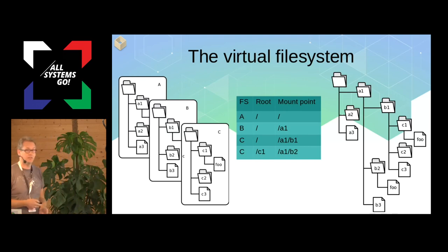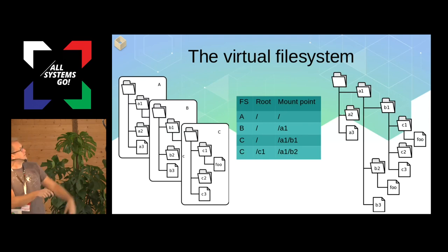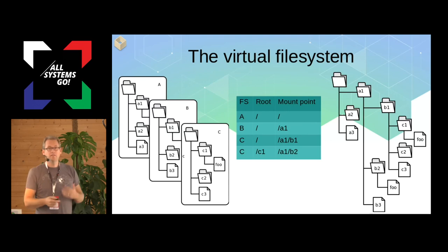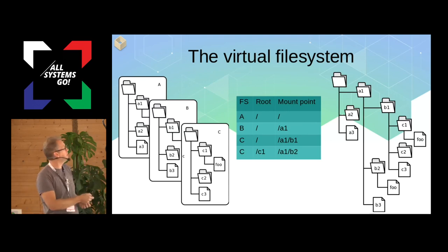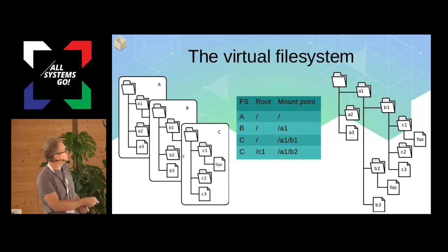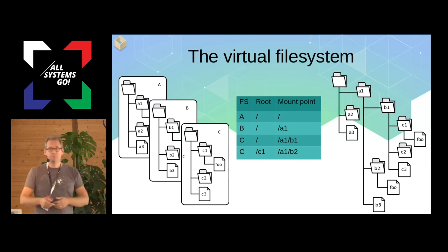The other tool is Bubblewrap — it's an unprivileged chroot on steroids. Most people know the virtual file system, but we have physical file systems stored on a device, and in the kernel there's a mount table that builds up the virtual file system. You might notice a filesystem can be mounted twice, making a file available at multiple paths — these are bind mounts, created by taking an existing mount and bind-mounting it elsewhere.